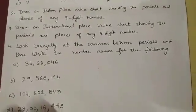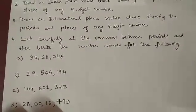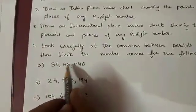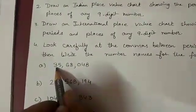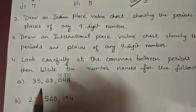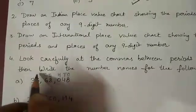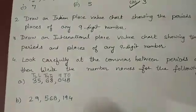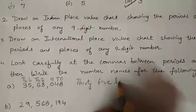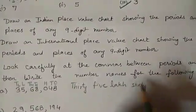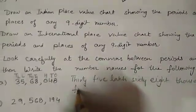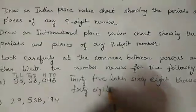Look carefully at the commas between periods and then write the number name for the following. First of all, we should observe the commas are after 3, 2, and 2. It means the number is written in the Indian place value system. So we will mark the places according to Indian place value chart. So the number will become 35 lakh, 68 thousand, 48.